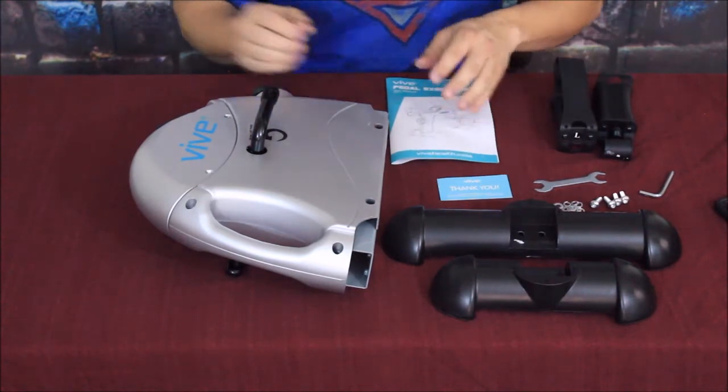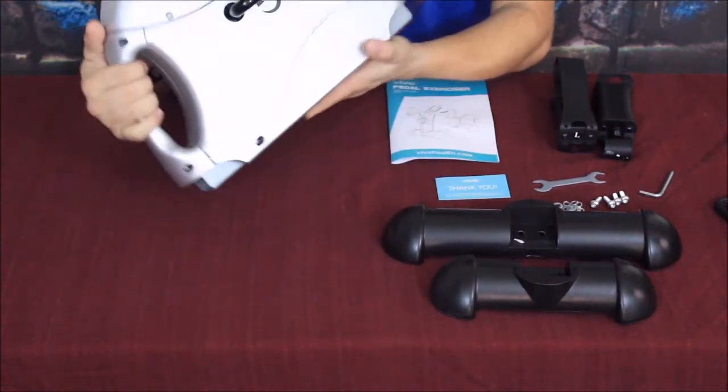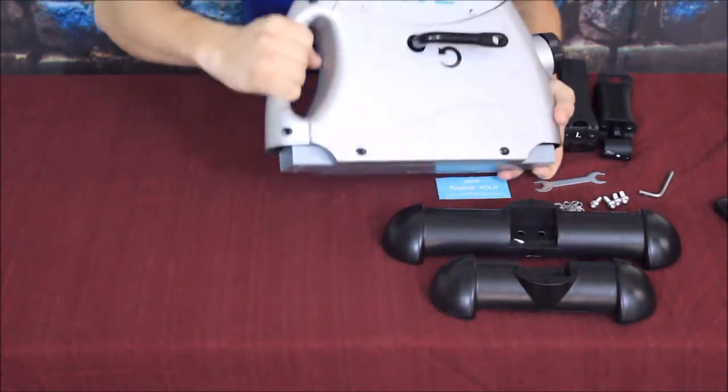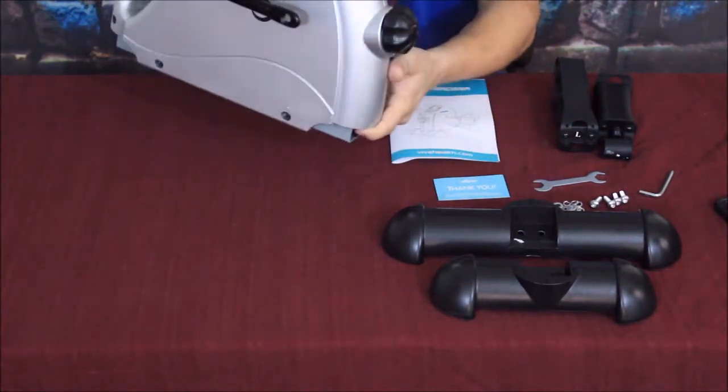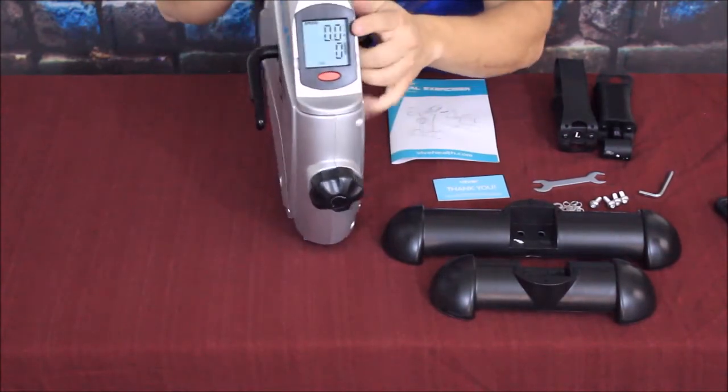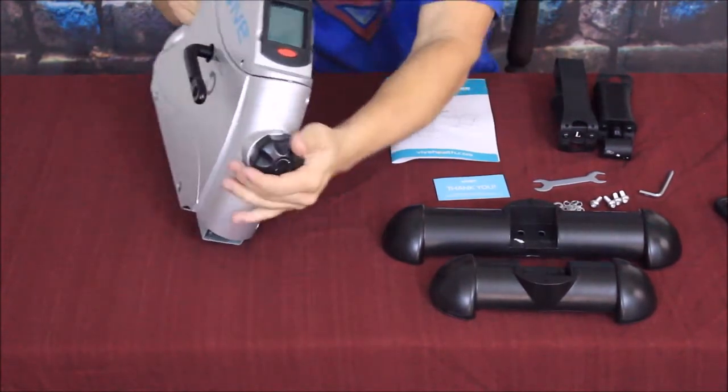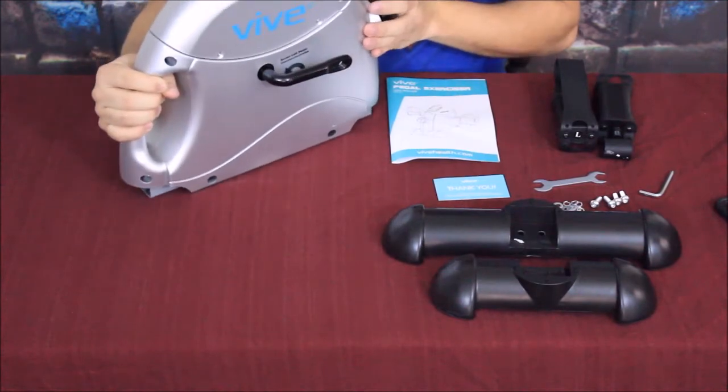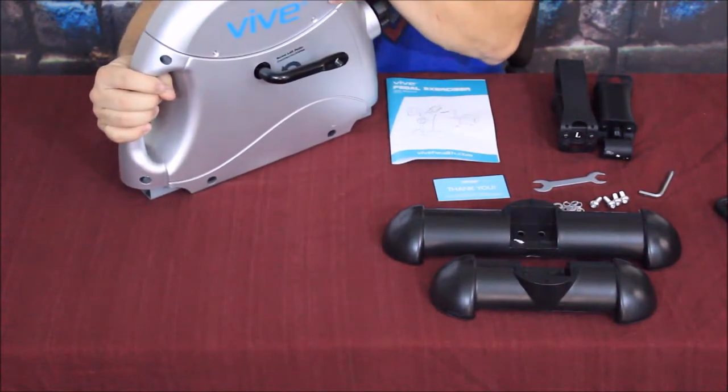Of course we've got the entire main unit here. It does come with a handle so it is portable - you can pick this up and take it with you. As you can see it does have an LCD display and it does seem to have a battery already in it, so you don't have to worry about buying batteries when you get it.